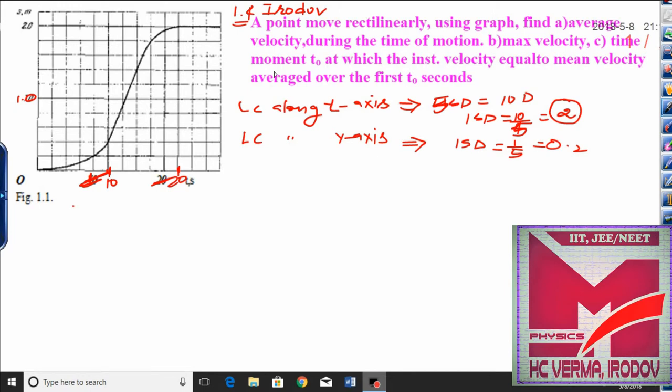This is question number 1.4 from Irodov Problems of Physics. Here I have drawn the graph with a little bit of correction. Along the x-axis this is 10, this is 20. Along the y-axis this is 1.0, this is 2.0.